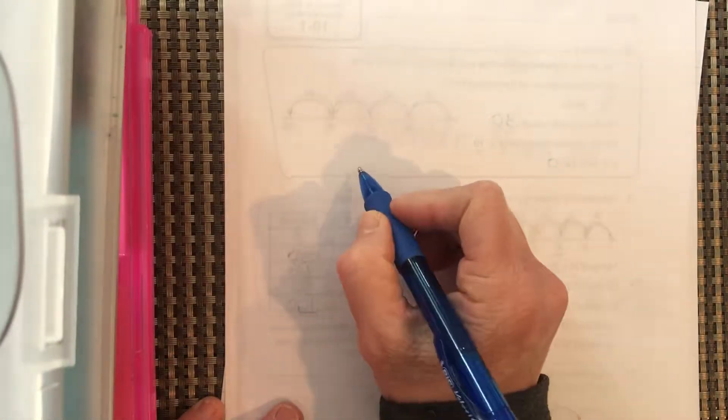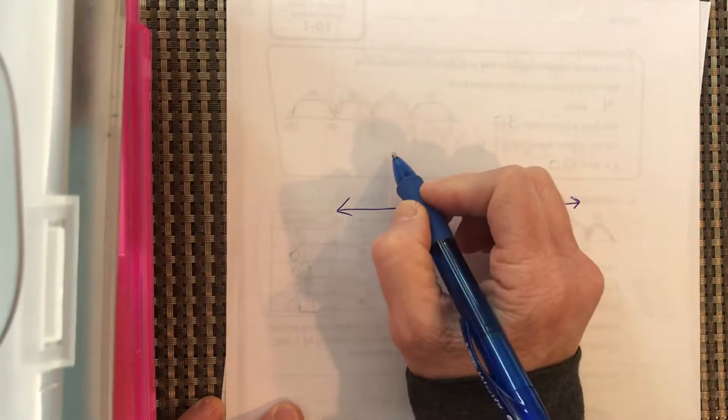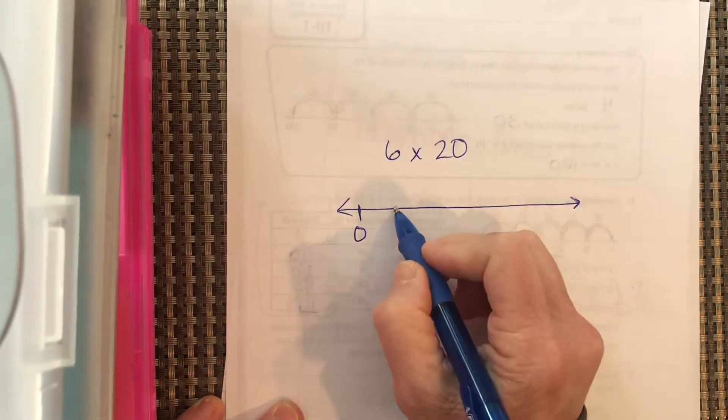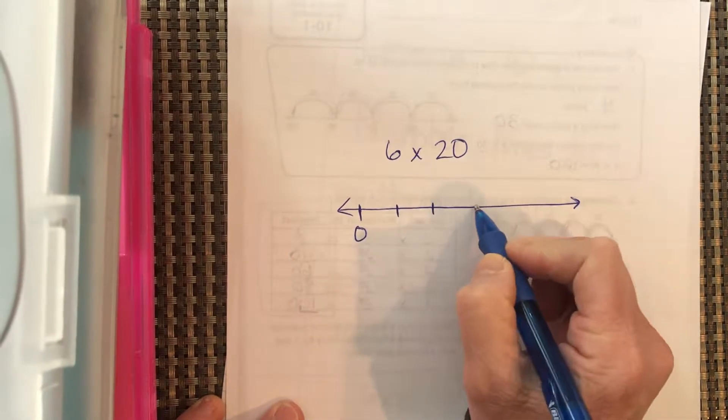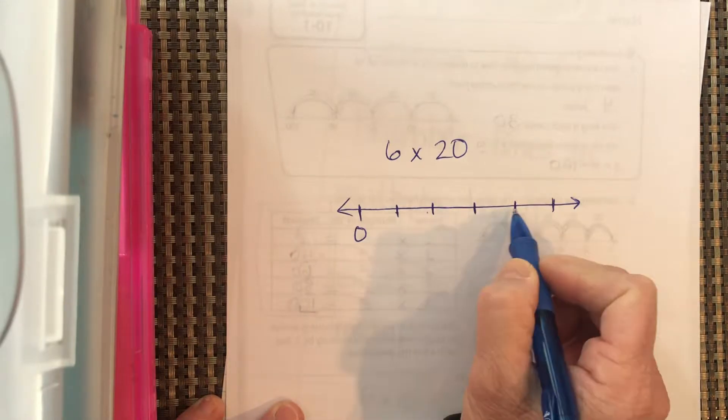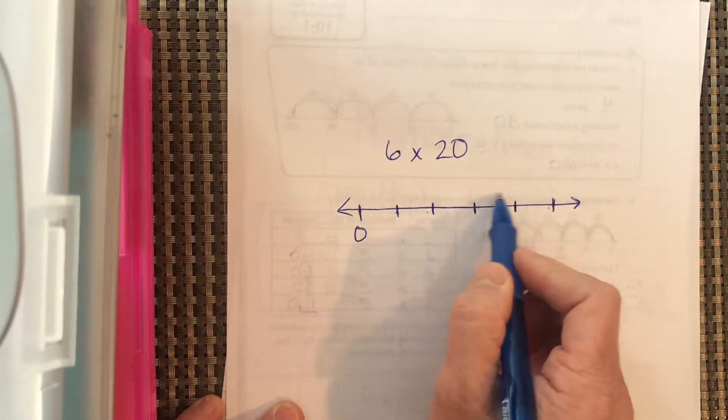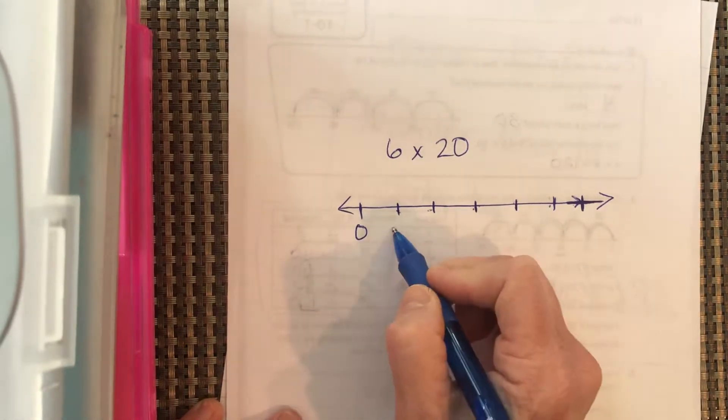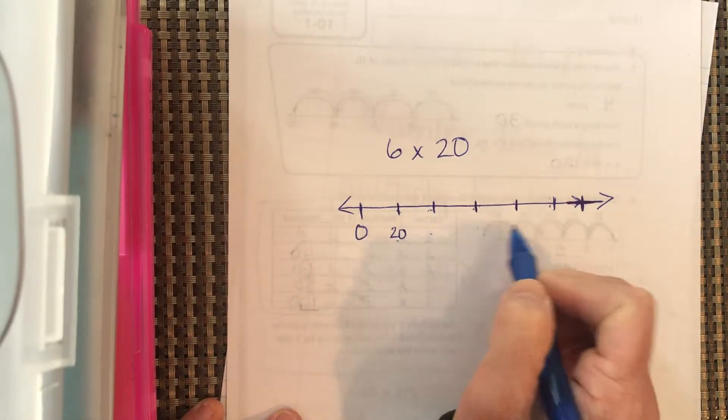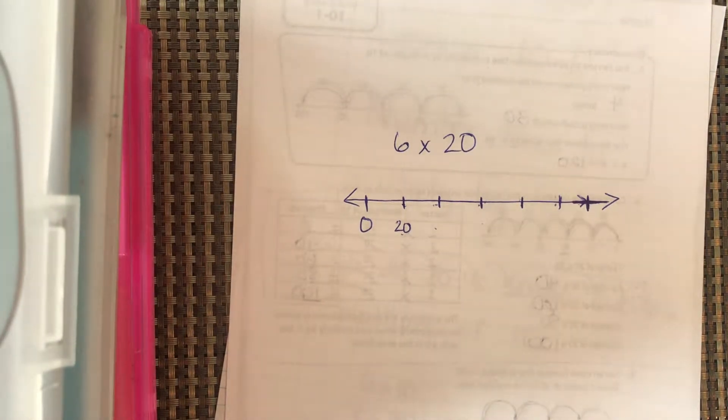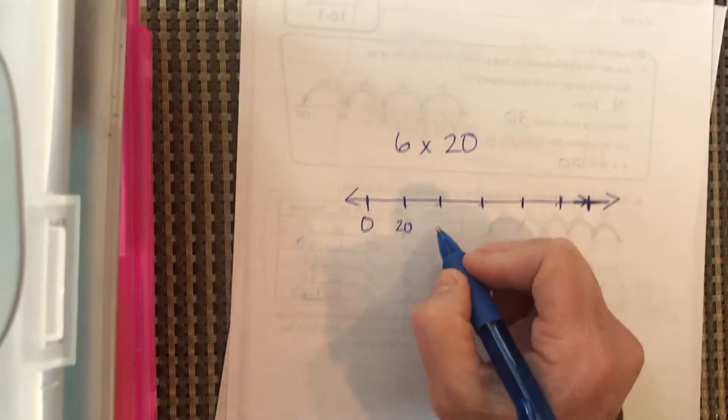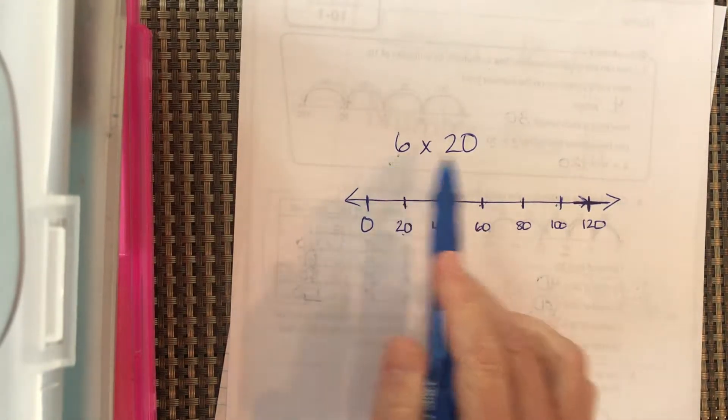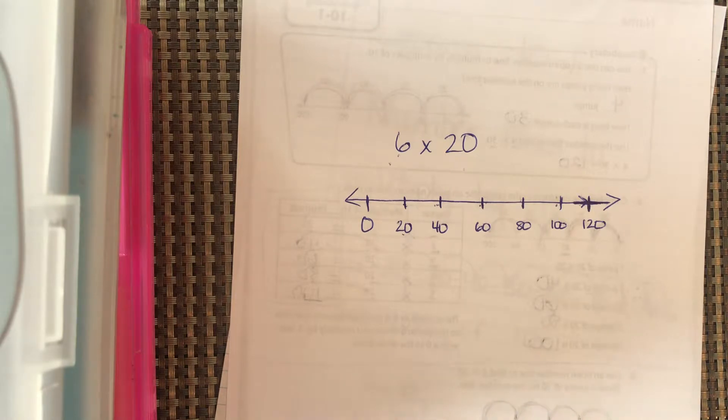One more in the back. I want you to draw an open number line to do 6 times 20. So start with zero. I have to go a little bit further. Six. One, two, three, four, five, six. Label these by 20s. So count by 20s. Pause it and come back. 20, 40, 60, 80, 100, 120. So now I want you to pause it and count six times 20 and tell me what the answer is. Use it on the number line. Don't start until you've won. This is not one. This is your start line. They haven't even blown the start whistle yet.